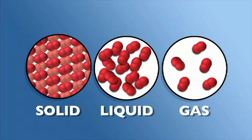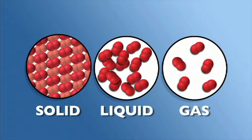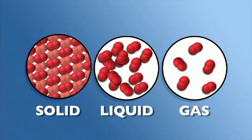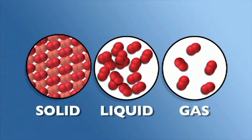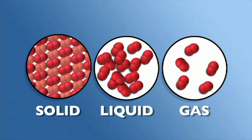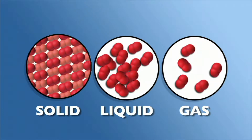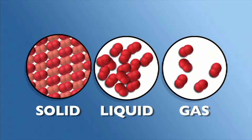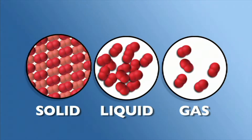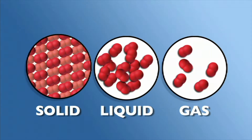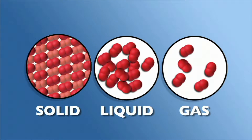There are three phases of matter. They are solid, liquid, and gas. If matter shifts from one of these phases to another, it is a change of state.